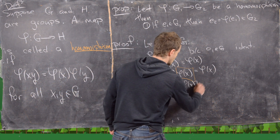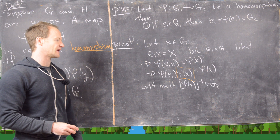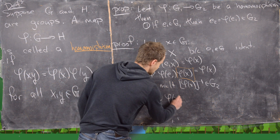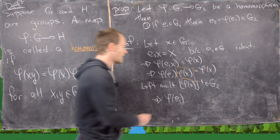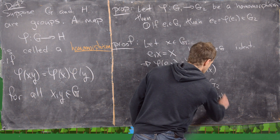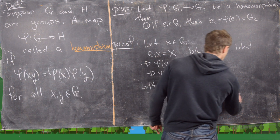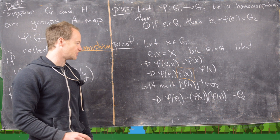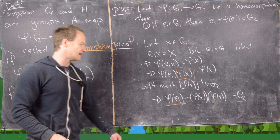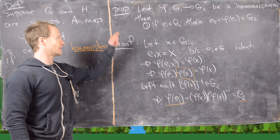Since phi of x is an element of G2, it has an inverse. Left-multiplying both sides by phi of x inverse gives phi of e1 on the left, and on the right phi of x times phi of x inverse, which equals e2, the identity of G2. Reading the extreme left and right sides of the equation, we see that the identity of G1 maps to the identity of G2 under this homomorphism.